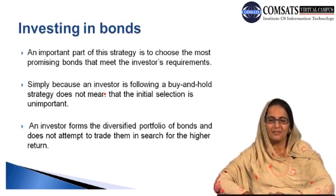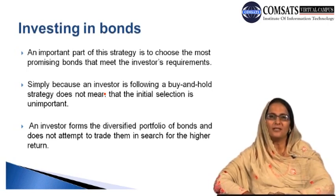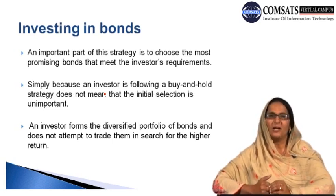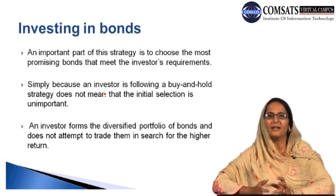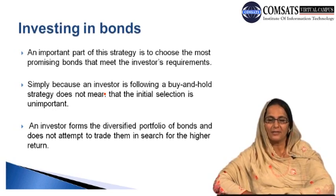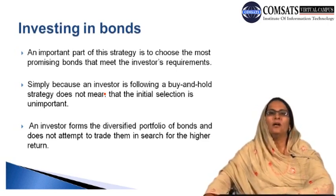Under the buy and hold strategy, an investor forms a diversified portfolio of bonds and does not attempt to trade them in search of higher returns. The investor is likely to hold more than one type of bond with different returns, different maturity times, different yield to maturity, and other characteristics — they are not likely to trade much in search of bonds giving higher returns.